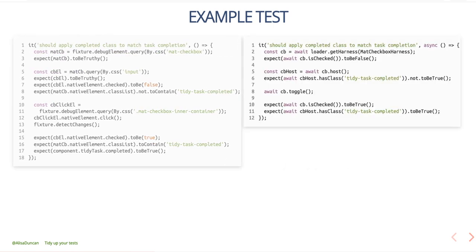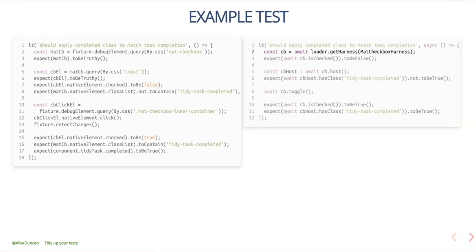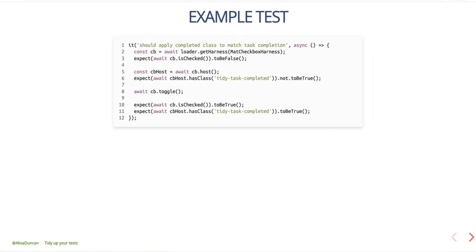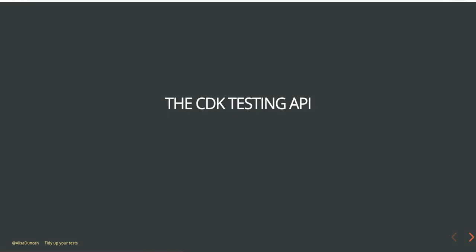In contrast, a test with test harnesses might look like this — notice it's a lot shorter. Following the same order of operations: first we get the mat-checkbox test harness using a loader. Then we verify that the checkbox starts off unchecked using a public API on the checkbox harness, which makes it really easy to tell what we're doing. Next we verify that the CSS class tidyTaskCompleted isn't on the checkbox, then toggle the checkbox to check it using a public API, and assert that it's checked and has the class tidyTaskCompleted. This test is not only shorter, it's far easier to read and write, and it'll make it easier for teammates to contribute and update as things change.